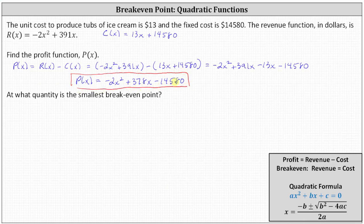And now we need to answer the question: at what quantity is the smallest breakeven point? The breakeven point is when the revenue is equal to the cost, and if the revenue is equal to the cost, that's also when the profit is equal to zero. So because we have the profit function, to find out what quantity is the smallest breakeven point, we set p of x equal to zero and solve for x.